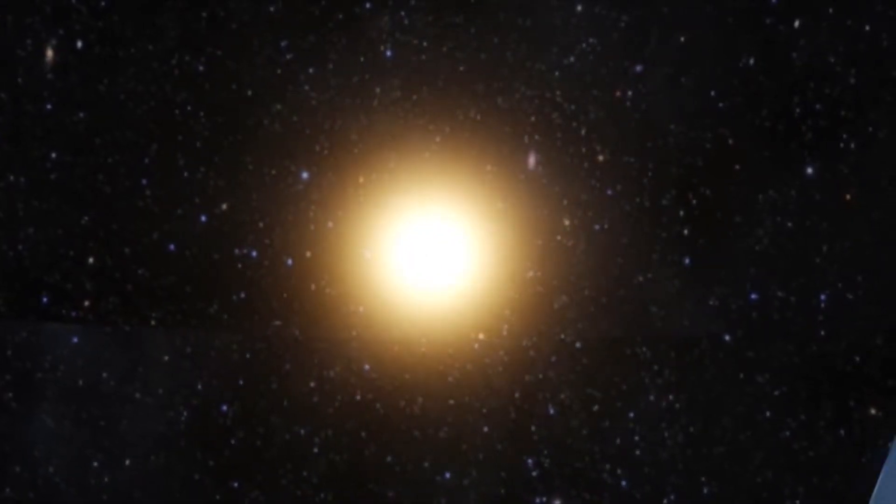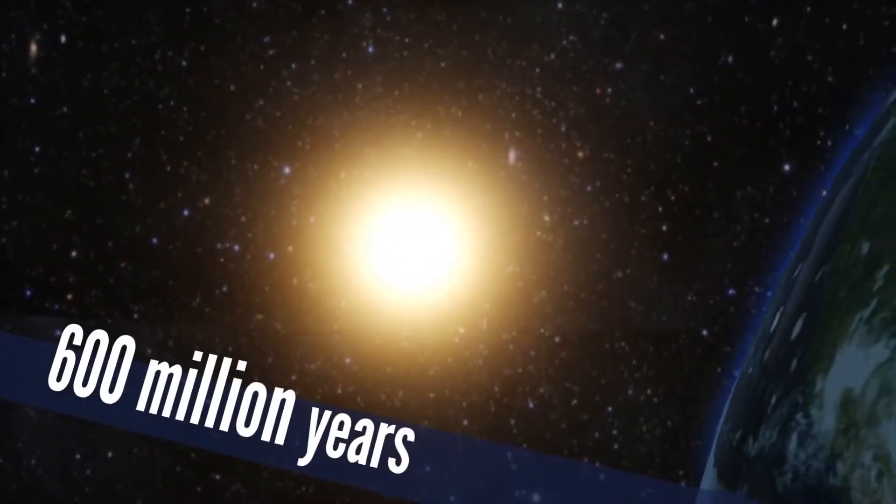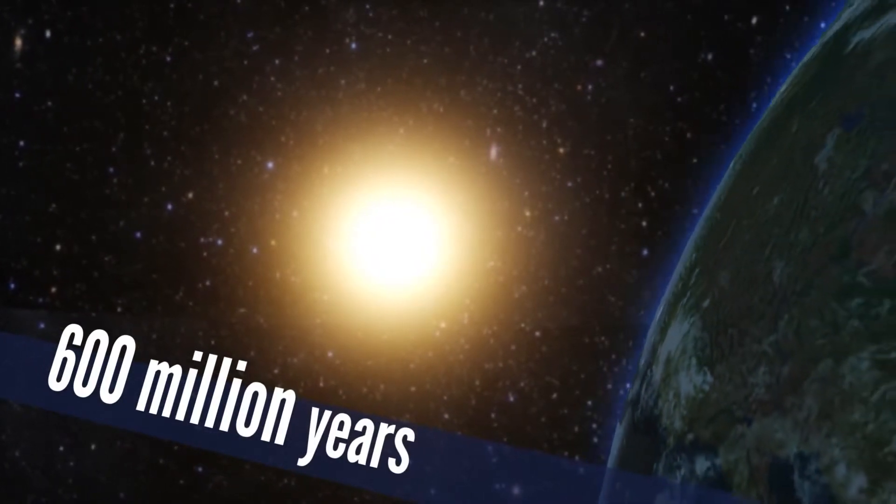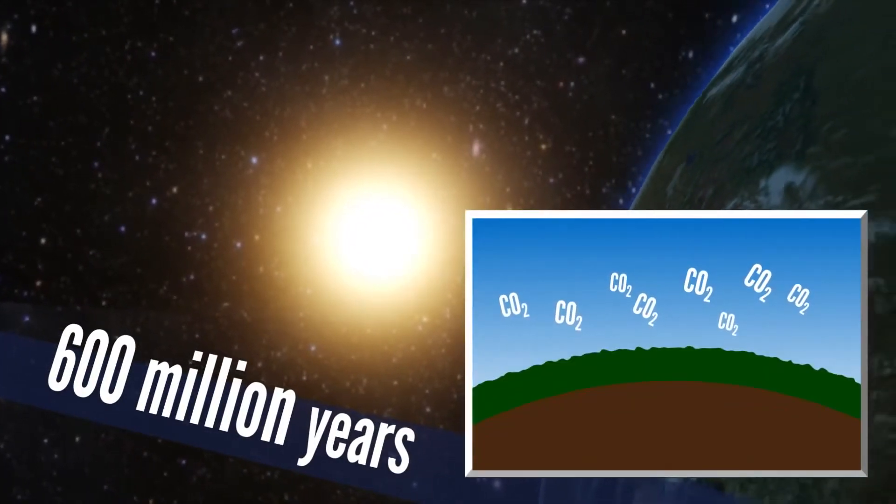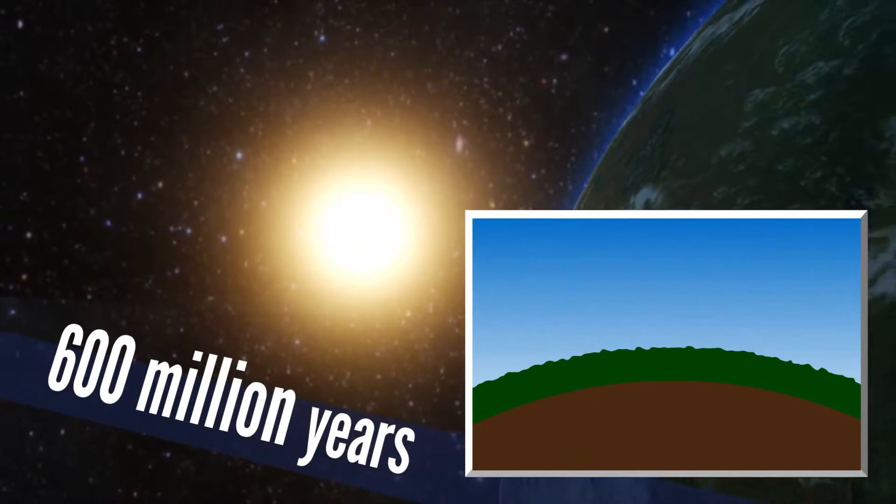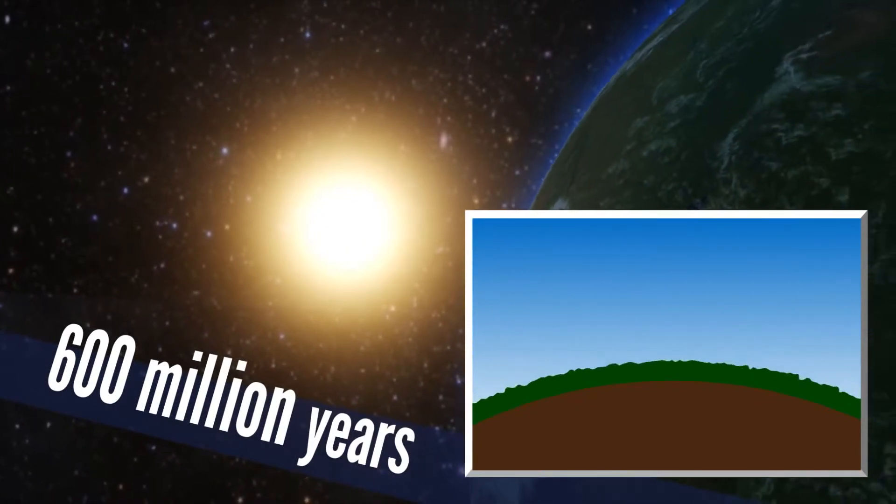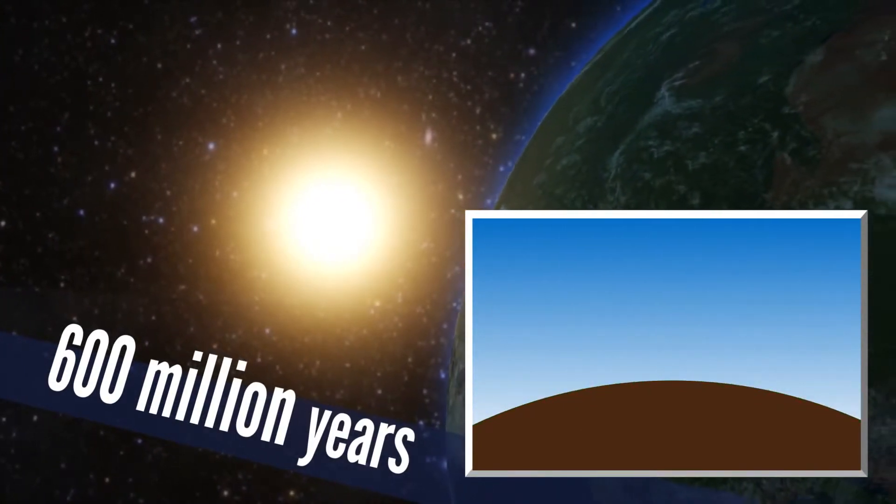As the sun gets older, it's getting hotter. 600 million years from now, our amped-up sun will cause more carbon dioxide to be trapped in Earth's crust, so much that photosynthesis becomes impossible for 99% of Earth's plants.